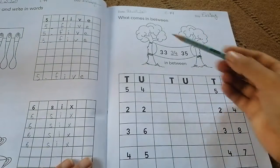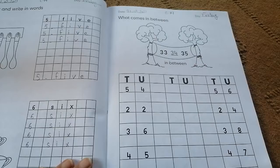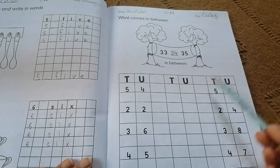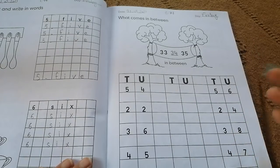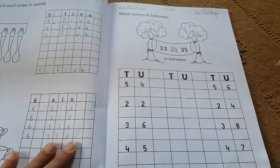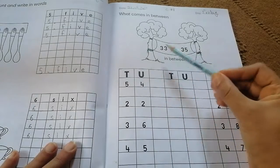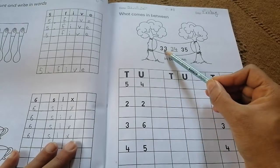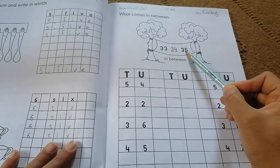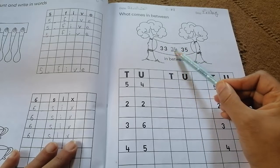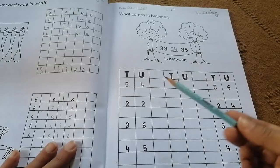We already did this concept: what comes in between? Two numbers are given, what number comes between these two numbers? We already did this. For example, the example is given: what comes between 33 and 35? So what comes between 33 and 35? 33, 34, and 35.